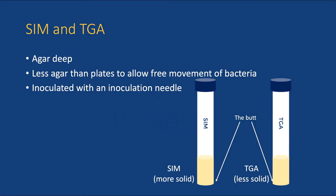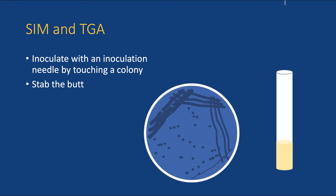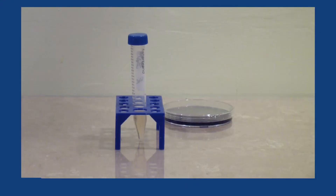With an inoculation needle, touch a colony on an MSAT plate. Remove the cap of the tube with the pinky of your dominant hand and keep the cap there. Do not place the cap on your workbench to avoid contamination. Working quickly, stick the inoculation needle down the center of the tube all the way to the bottom. This is called stabbing the butt. Pull the needle straight out when you're done.